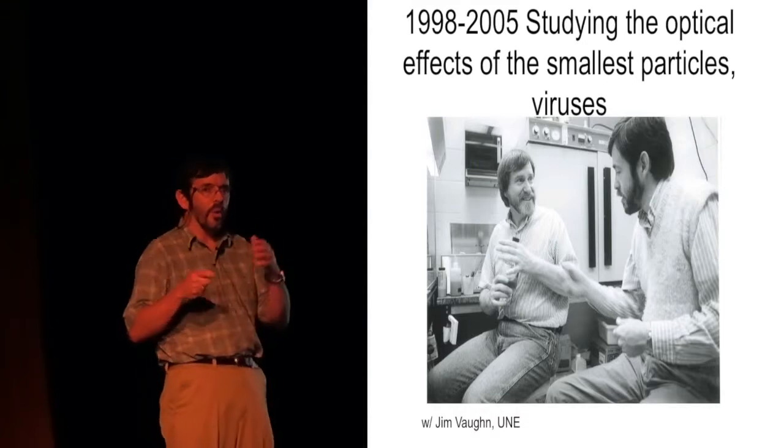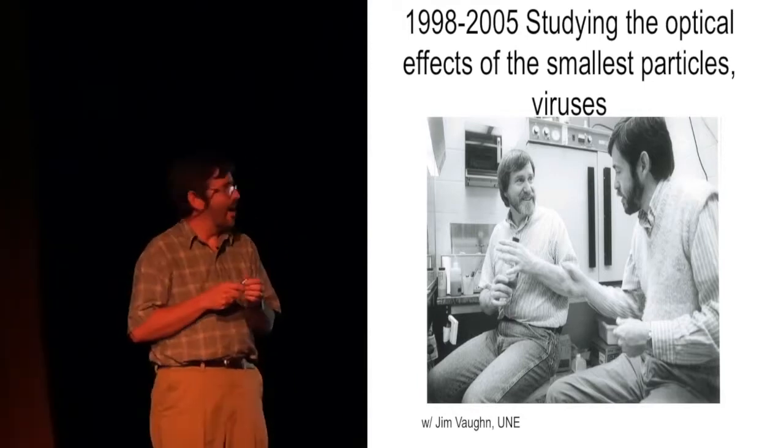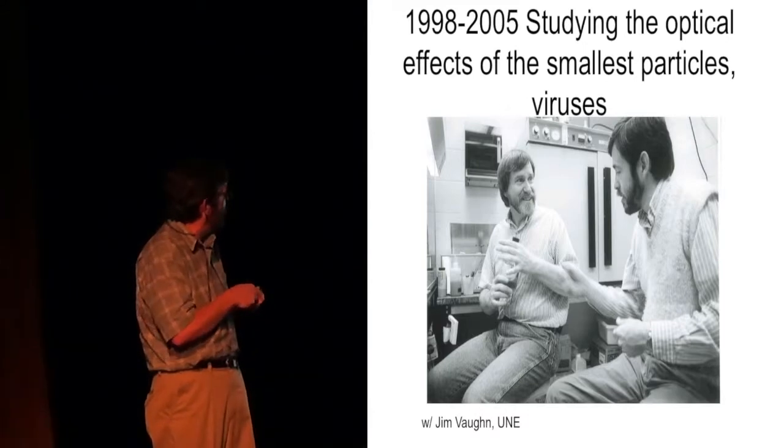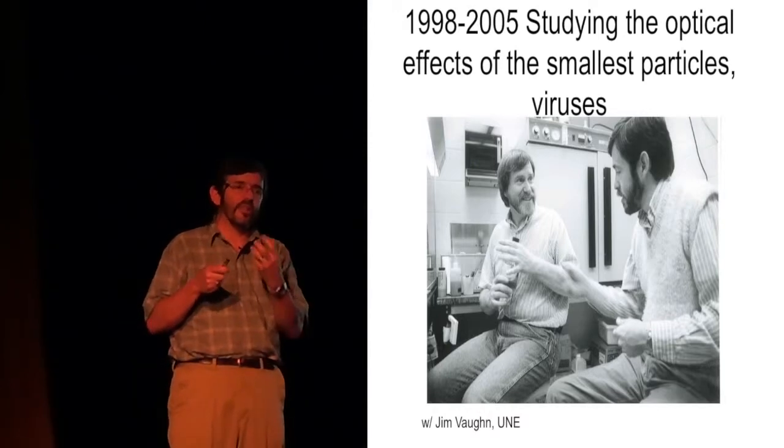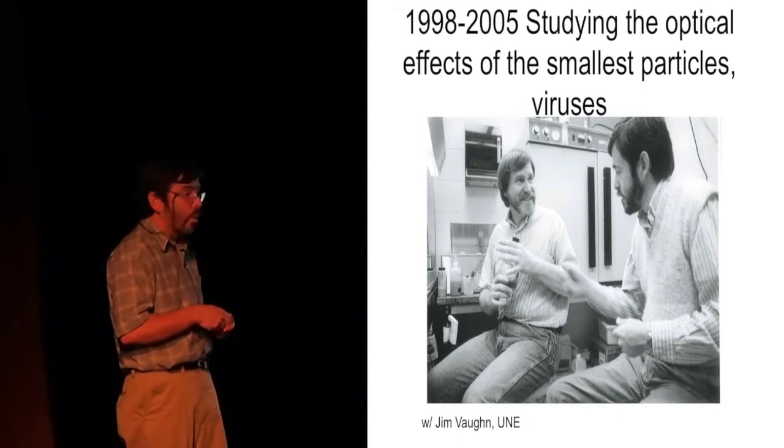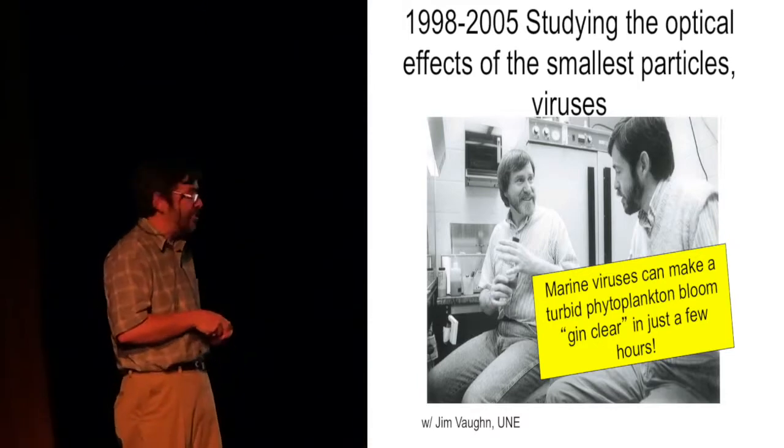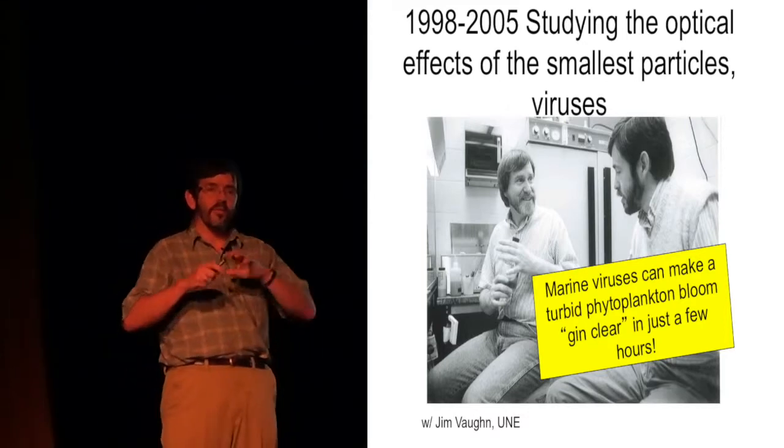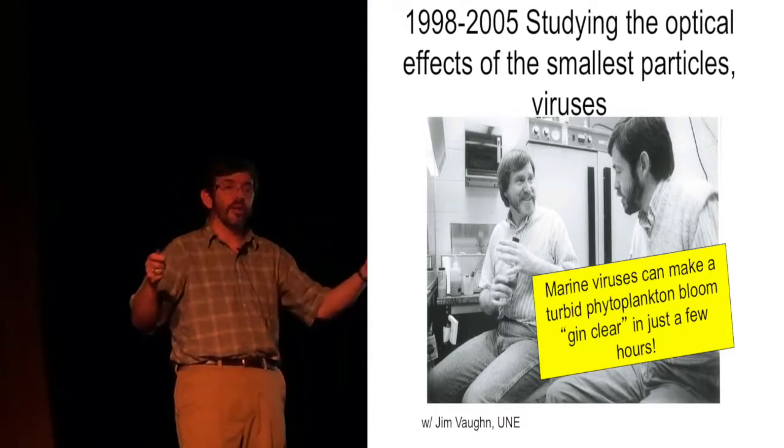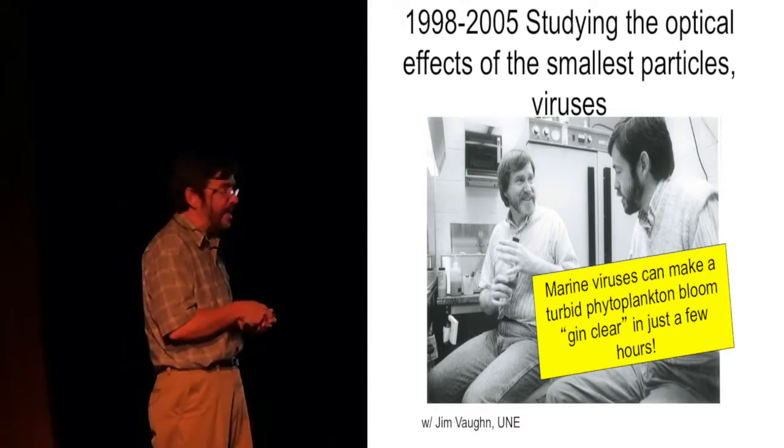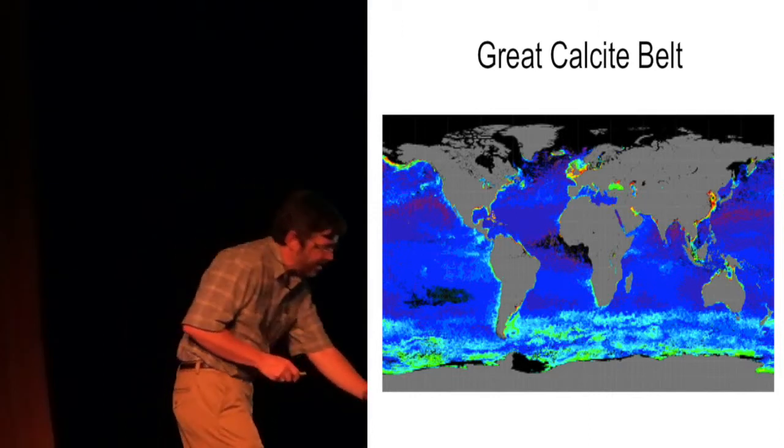And then I mentioned the virus work. We have folks at the lab now, Willie Wilson and Joaquin, who are working on viruses. We were doing this work in the 90s, looking at the optical properties of marine viruses. And how could you actually see an optical signature of these? And what did they look like? And what we discovered was that these marine viruses could make a turbid phytoplankton bloom gin clear in the scale of an hour. From people who work with viruses, that's probably not a big surprise. But from an ocean optics perspective, when you're trying to understand the time scales of which a bloom changes, that's a big deal, because these things clarify the water.